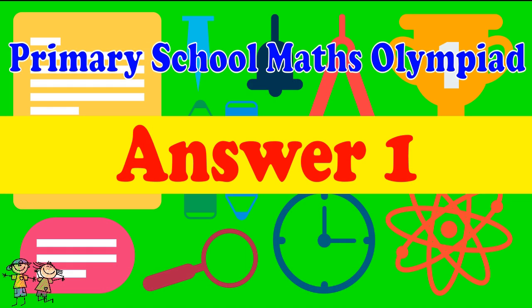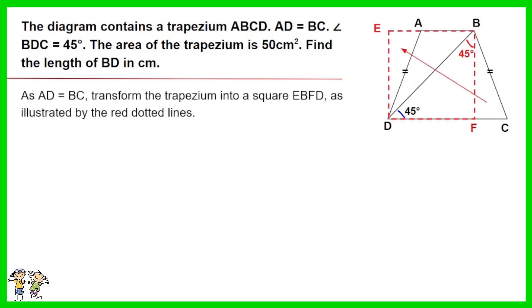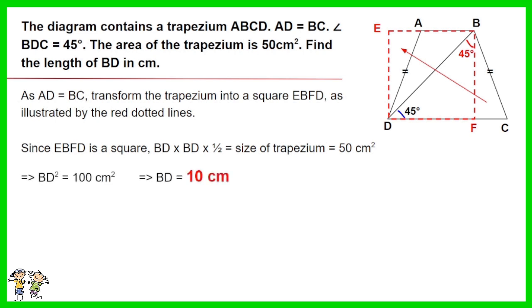Answer for question 1. As AD equals BC, transform the trapezium into a square EBFD, as illustrated by the red dotted lines. Since EBFD is a square, BD times BD times 1 half equals size of trapezium, equals 50 centimeters squared. As such BD squared equals 100 centimeters squared. BD is equal to 10 centimeters.